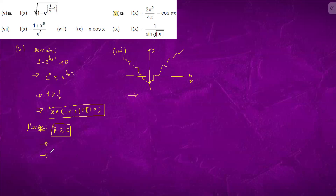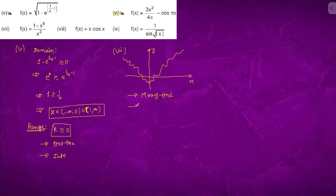If we have all real numbers as the range, then this function is into because only some values are covered. Now, e to the power x is a one-one function, so any composition with it will also be one-one. However, this particular function is many-one and into, because the given range is all real numbers but the actual range is only part of it.